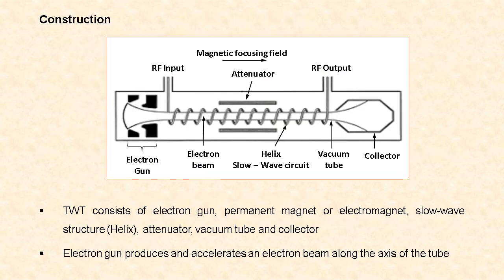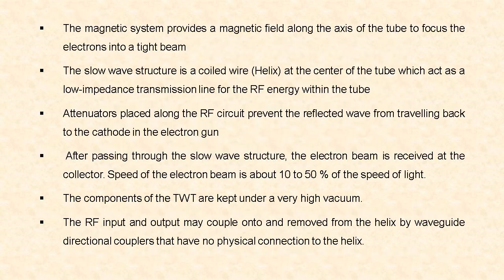The construction of traveling wave tubes: the traveling wave tube consists of an electron gun, which has a cathode, anode and heater. Then permanent magnets or electromagnets provide the required magnetic field. The slow wave structure — here a helix is used — along with a vacuum tube and collector. In the electron gun, a heated cathode emits electrons, and the electron gun produces and accelerates an electron beam along the axis of the tube. The magnetic system, that is the permanent magnet or electromagnet, provides a magnetic field along the axis of the tube to focus the electrons into a tight beam.